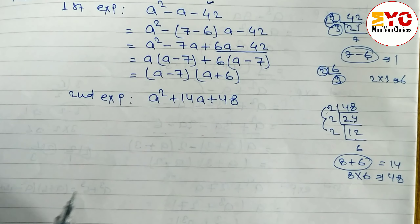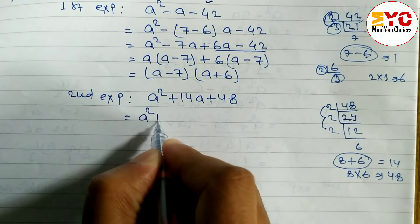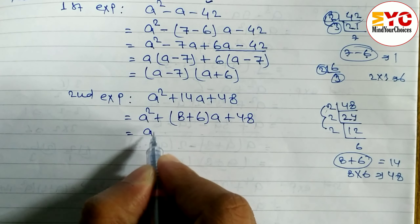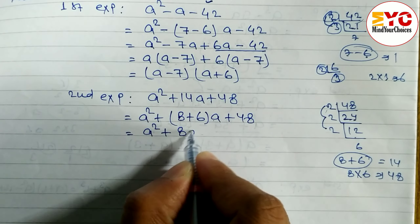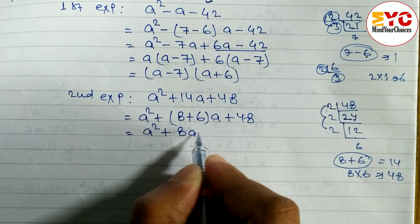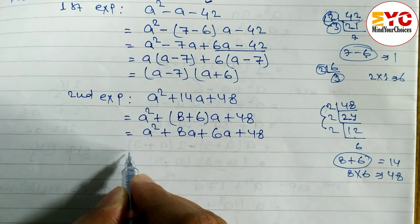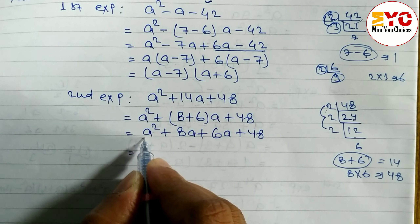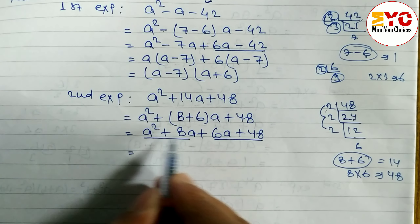We write: a squared plus, and in place of 14 we write 8 plus 6, so: a squared plus 8a plus 6a plus 48. Now we open the bracket and from the first two terms we take common, and from the last two terms we take common.